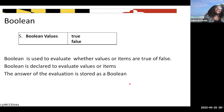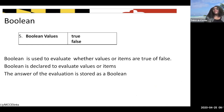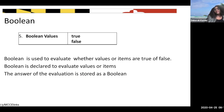The next operation we're going to learn about is the Boolean value. Boolean just takes true or false - it takes two different values and evaluates them, and at the end you have either a true or a false depending on the values you have. Boolean is used to evaluate whether values of items are true or false, and the answer of evaluation is stored in the Boolean.